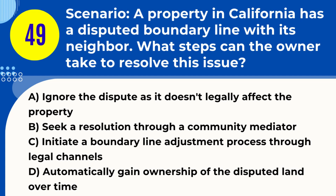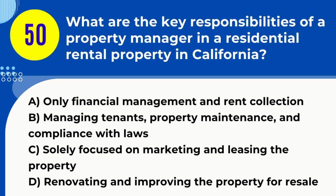Question 49. Scenario: A property in California has a disputed boundary line with its neighbor. What steps can the owner take to resolve this issue? A. Ignore the dispute as it doesn't legally affect the property. B. Seek a resolution through a community mediator. C. Initiate a boundary line adjustment process through legal channels. D. Automatically gain ownership of the disputed land over time. Answer: C. Explanation. In a disputed boundary line situation in California, the property owner can resolve the issue through legal channels, such as initiating a boundary line adjustment process, which may involve surveying and legal agreements with the neighbor.